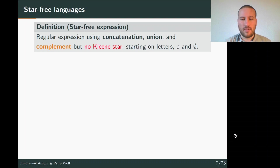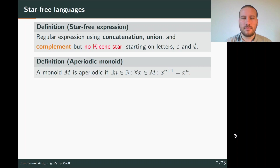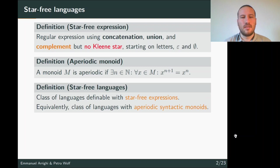Star-free languages can be defined in two ways. First, by star-free expressions: a star-free expression is a regular expression in which we are not allowed to use the Kleene star but we can use complementation. The second characterization is about monoids: a monoid is aperiodic if for every element x, the sequence x^i stabilizes, i.e., there exists n such that x^(n+1) = x^n.